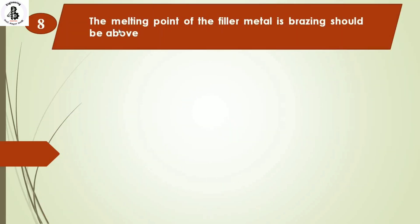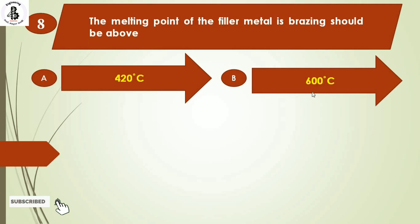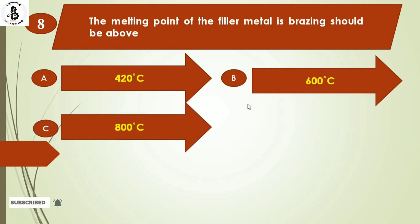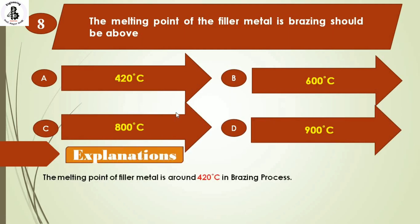The melting point of the filler metal in brazing should be above: Option A: 420 degrees centigrade. Option B: 600 degrees centigrade. Option C: 800 degrees centigrade. Option D: 900 degrees centigrade. For brazing, the melting point of the filler metal is around 420 degrees centigrade. So the answer is option A.